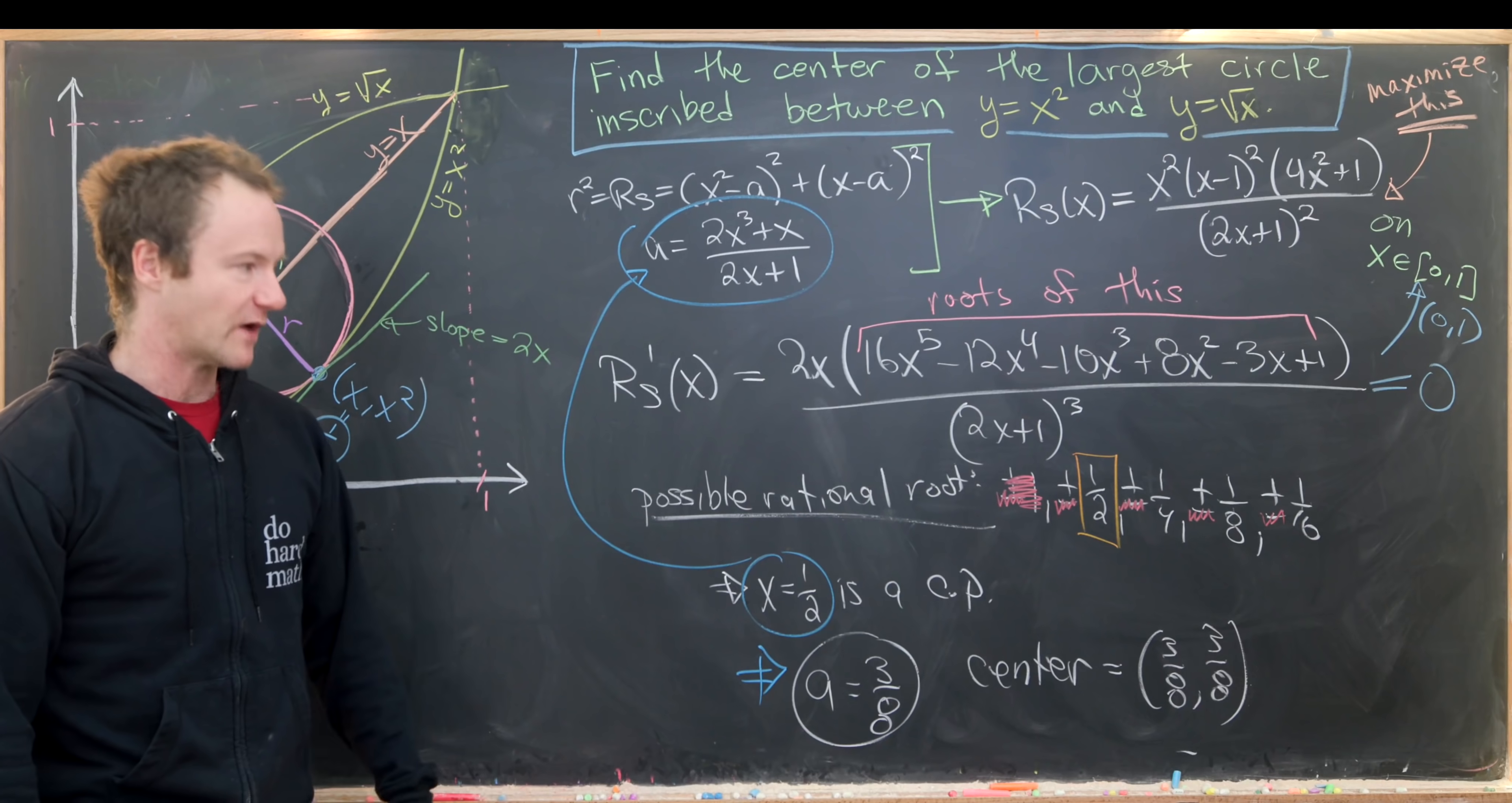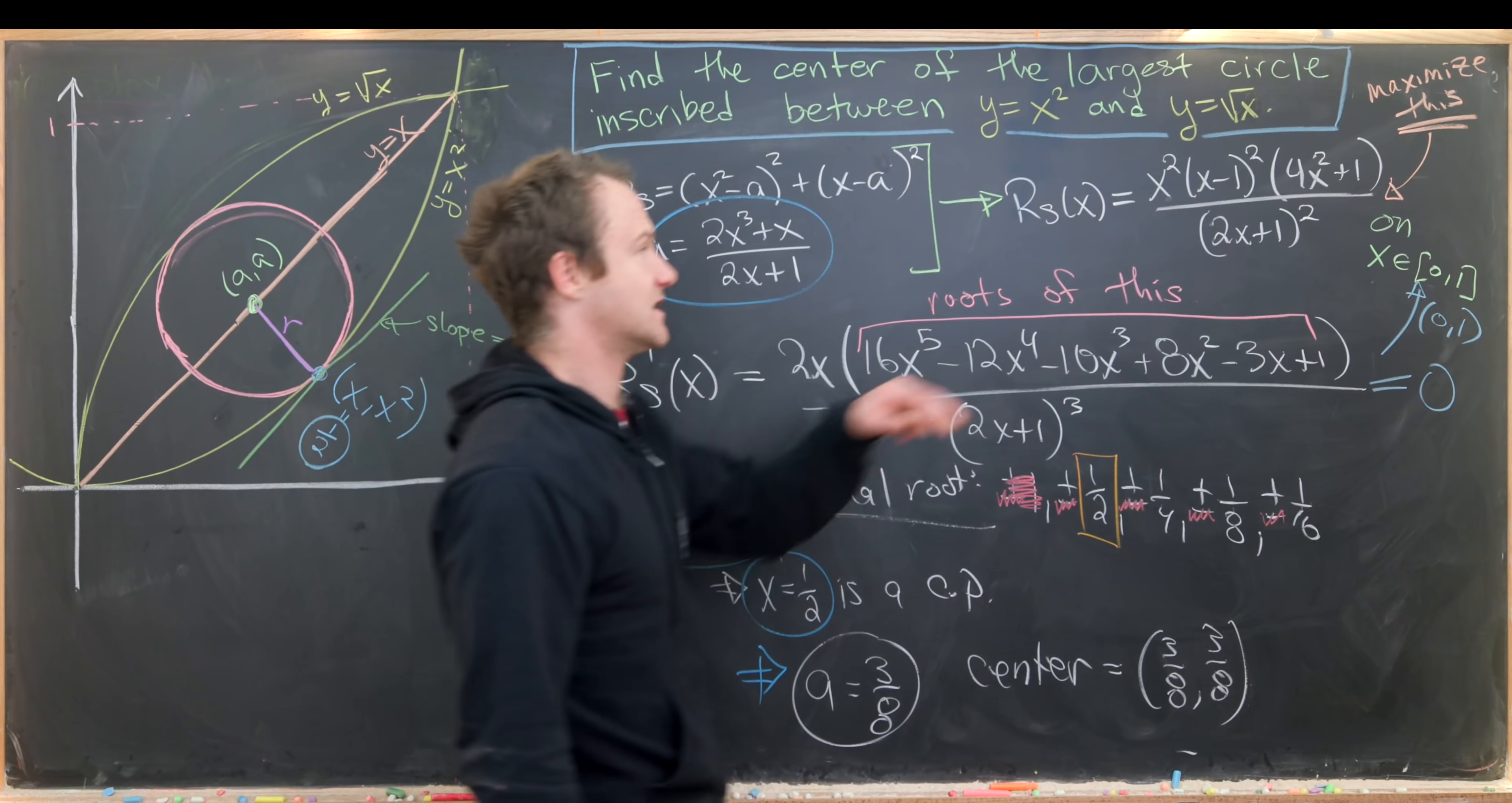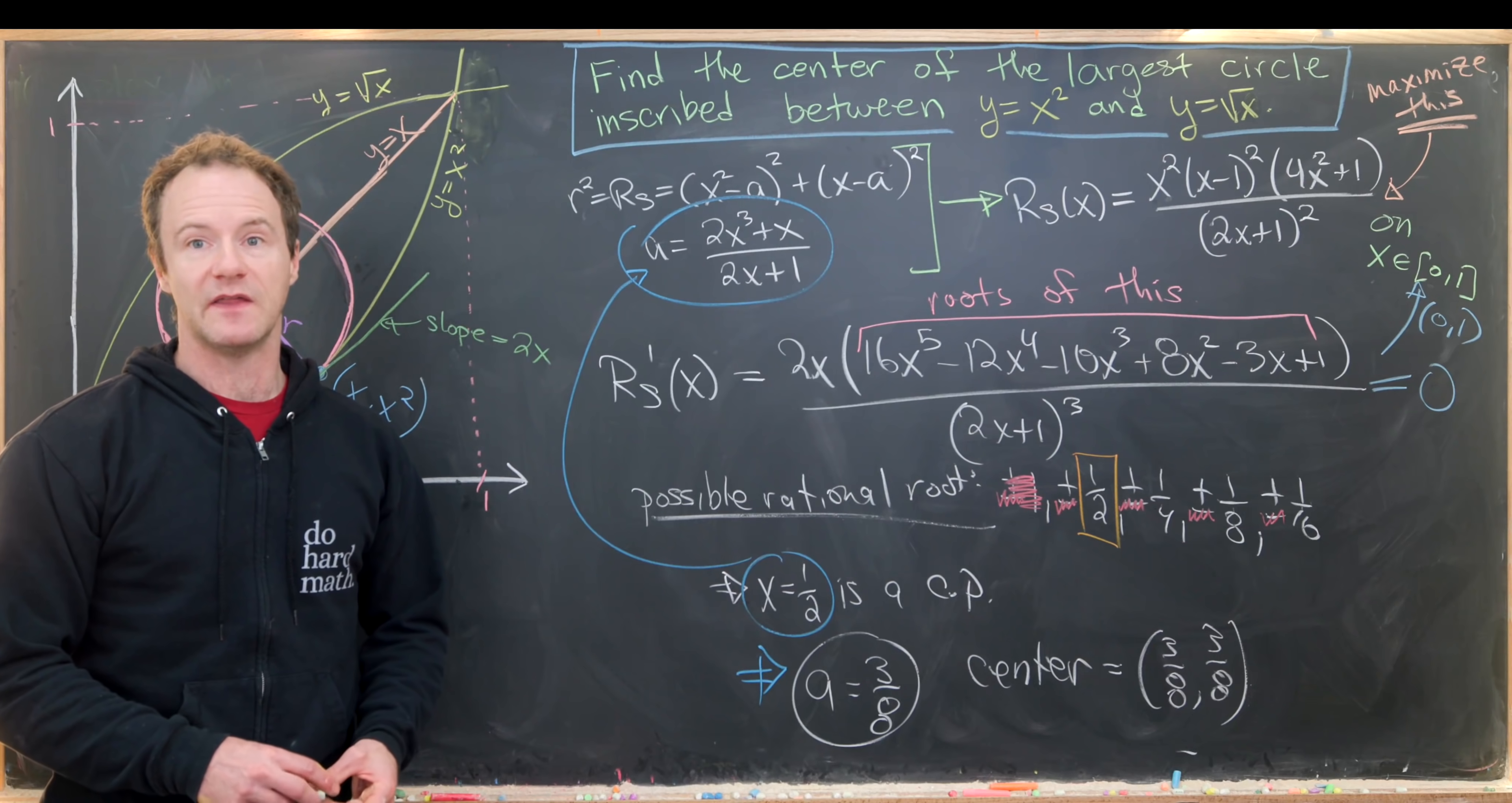We didn't ask for the radius of the circle, but that's actually quite easy to get as well. You can just plug this value of x and see what pops out. Maybe post in the comments what you get for the radius. That's a good place to stop.